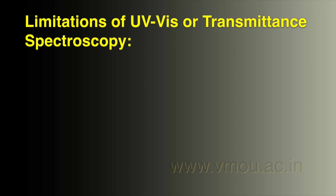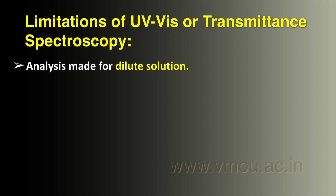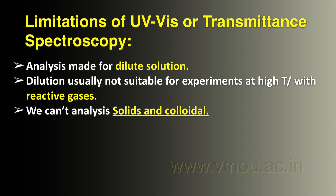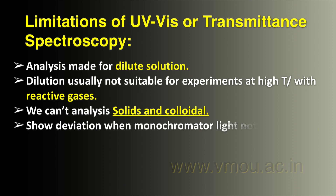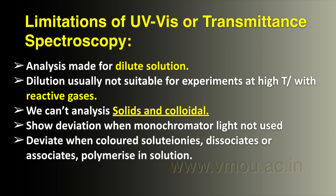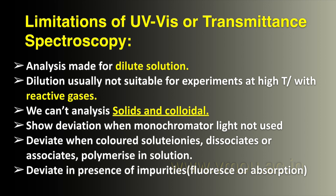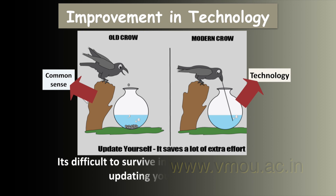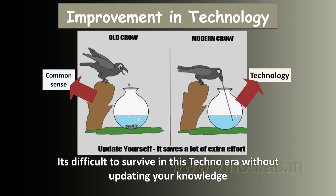These are limitations of UV-visible transmittance spectroscopy. The analysis is made for dilute solutions only, and it is not suitable for experiments at high temperature or with very reactive gases. We cannot analyze solid and colloidal samples with this technique. It can show deviation when non-monochromatic light is used, or when a colored solution ionizes, dissociates, associates, or polymerizes. It can also deviate in the presence of impurities due to fluorescence. So we need to improve the technology, and it is difficult to remain current without updating our knowledge.